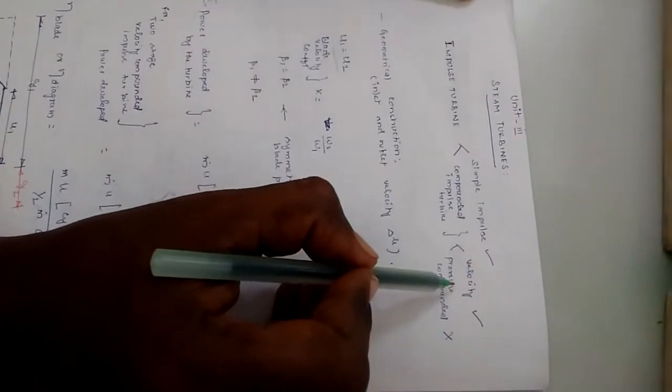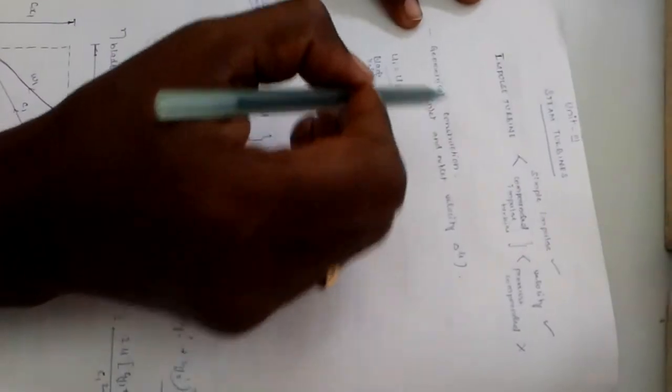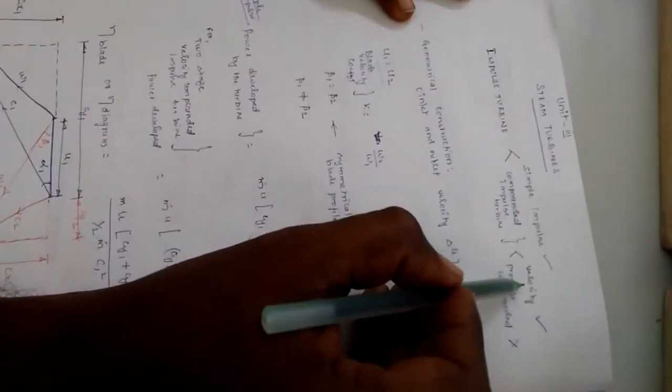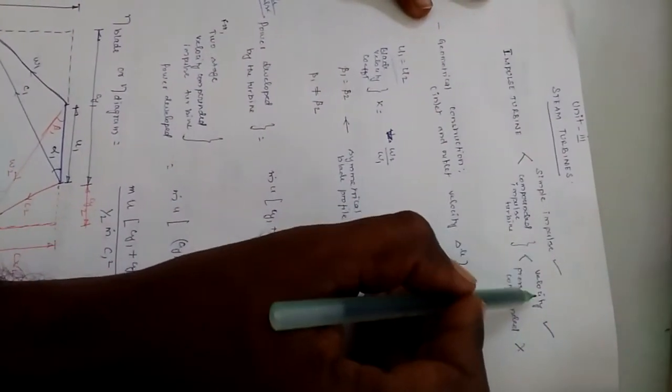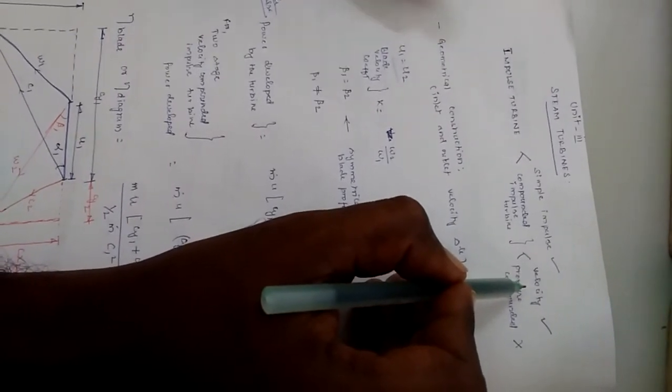To solve problems on impulse turbine we are going to adopt a geometrical construction, because when we are going to solve problems of turbine under different stages, geometrical construction is simple to perform the analytical calculation.